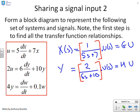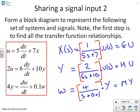And finally, at the bottom, I've got W equals 4 over s plus 0.1 into Y, and I'm going to call this one MY. So M is 4 over s plus 0.1. So as ever before, the first thing I've done is make sure everything is written in a consistent notation using transfer functions. So I've got X equals GU, Y equals HU, W equals MY. And my next step now is to say, how do I put this into a block diagram?